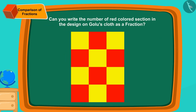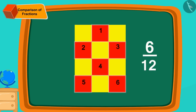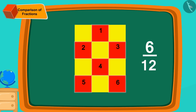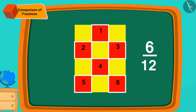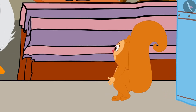Can you write the number of red colored sections in the design on Golu's cloth as a fraction? Find the answer by pausing the video. Oh wow, children, you have found the answer absolutely correctly — the red colored section is also six twelfths part of the design.